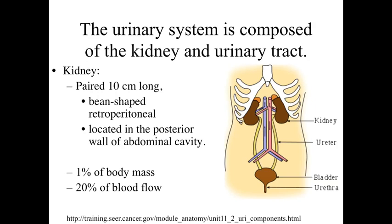If we take a look at the urinary system and the organs associated with it, the primary organ is going to be the kidney, and the kidney is going to be a paired organ. They're going to be located retroperitoneally, essentially on the posterior wall of the abdominal cavity, and they're going to be a kidney bean shaped structure, about 10 centimeters in length.